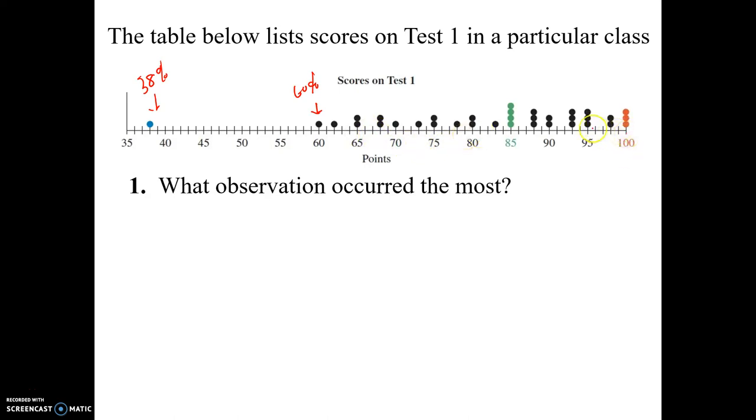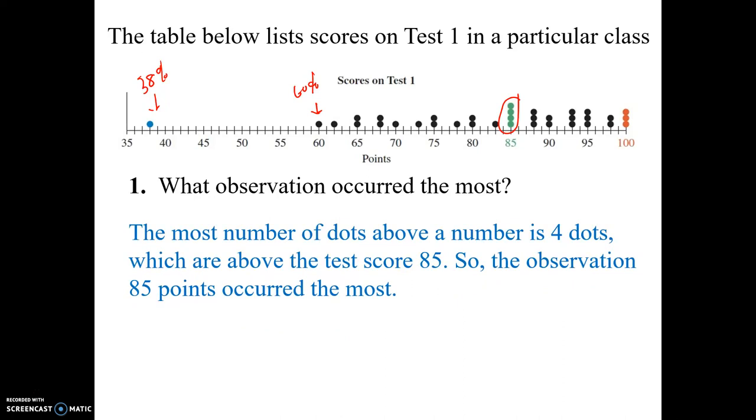Three people got 100%, three people got 95, three people got 93. However, the most common score, well the score that occurred the most is 85%. The most number of dots above a number is four dots, which are above the test score of 85. So the observation 85 points occurred the most. So each dot just represents a value.